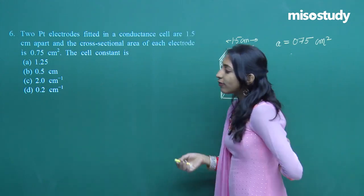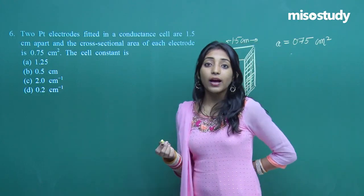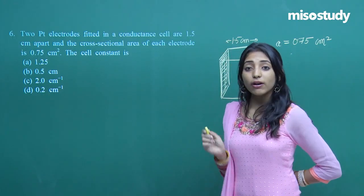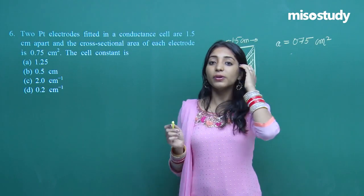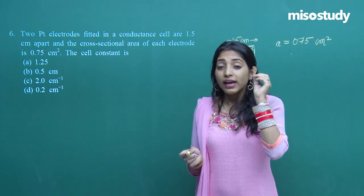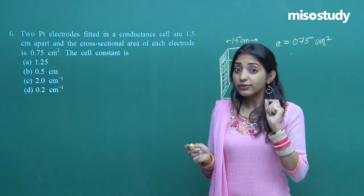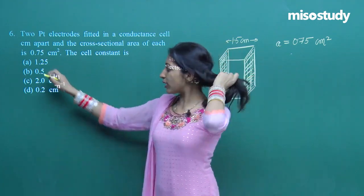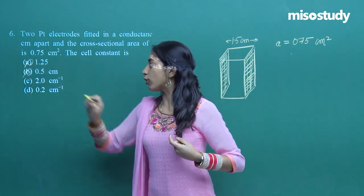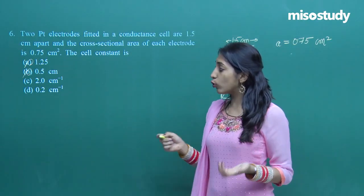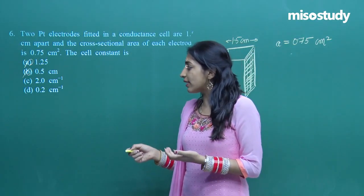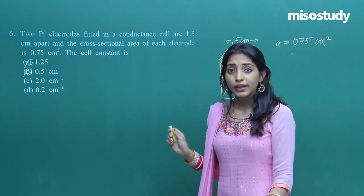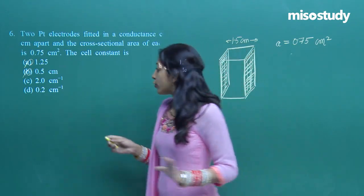The cell constant has units of cm⁻¹, so options with other units can be eliminated immediately. The cell constant is L/A, i.e., length over area of cross-section. So: cell constant = 1.5 cm / 0.75 cm² = 2.0 cm⁻¹.